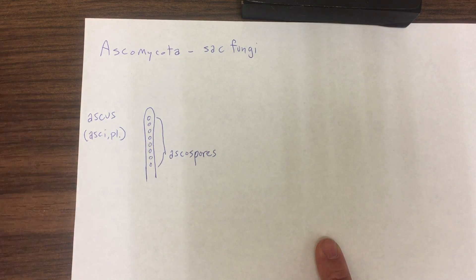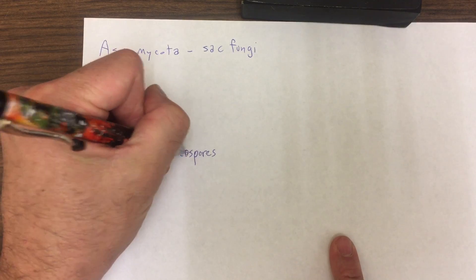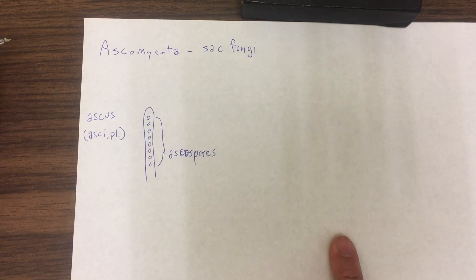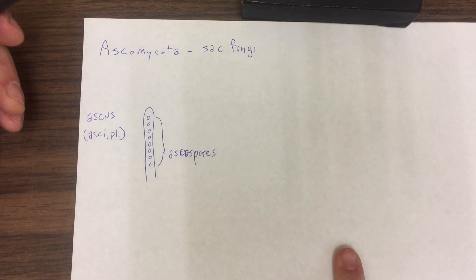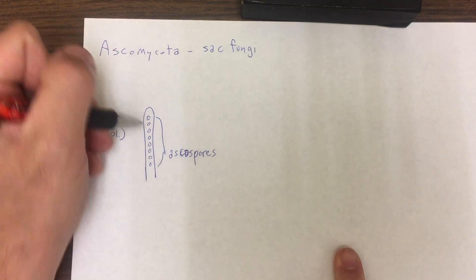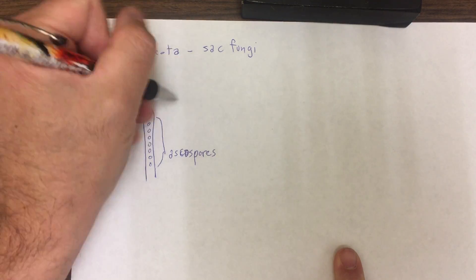So these are the spores that are produced through sex, through meiosis, through plasmogamy, karyogamy, and meiosis to produce our ascospores and mitosis. But that'll come along later.